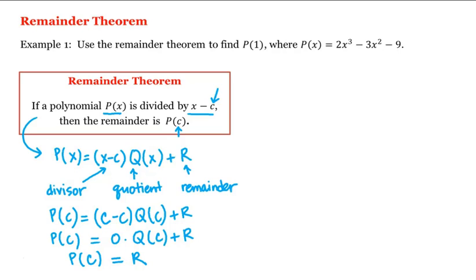Let's apply this to our problem. We want to find p of 1, so our c is equal to 1. Therefore p of 1 will be the remainder when we divide p of x by x minus c, or x minus 1. We could use either long division or synthetic division, but let's use long division here.